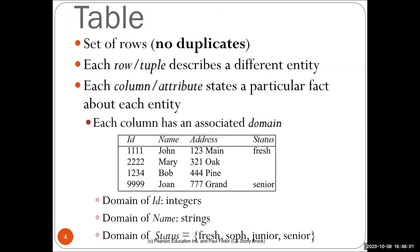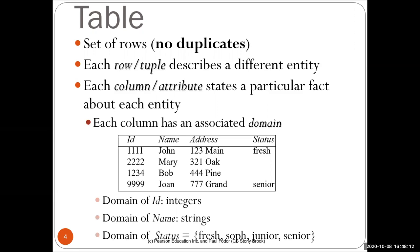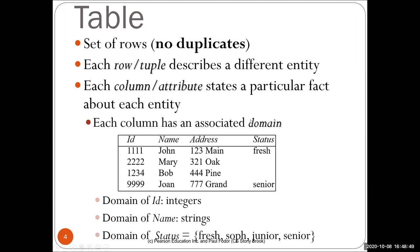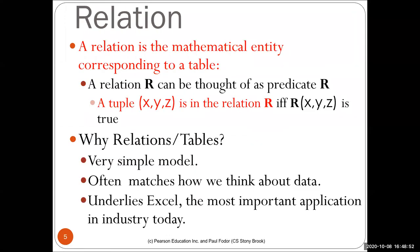A table is basically a set of rows with no duplicates — you don't have the same row in multiple places. Each row describes a different entity; in our example, different student instances. Each column or attribute states a particular fact about each entity. Each column is usually associated with a domain — for instance, the ID is an integer, the name is a string, the address is a string, and the status is in a set of values: freshman, sophomore, junior, and senior.